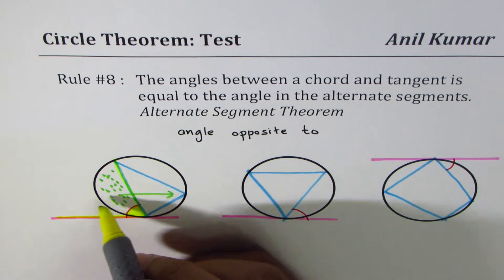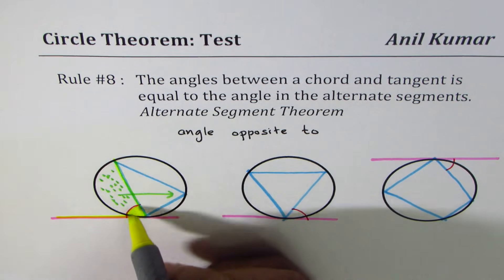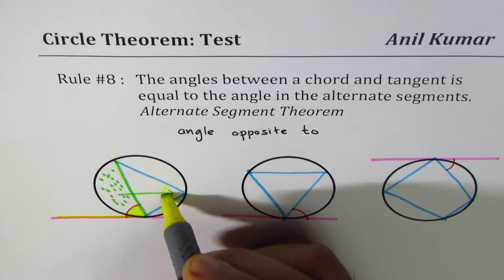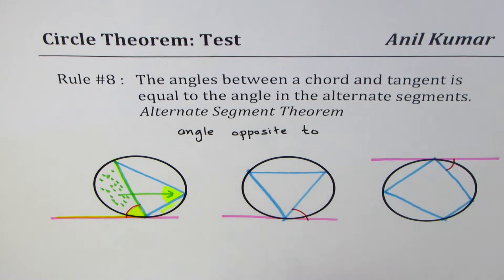Not this one, not this one, so the other segment is right there. That is the angle we are talking about. Do you understand? That is how you identify the alternate segment. Let's do one more exercise. Let's say that the angle given to us here is 42 degrees.